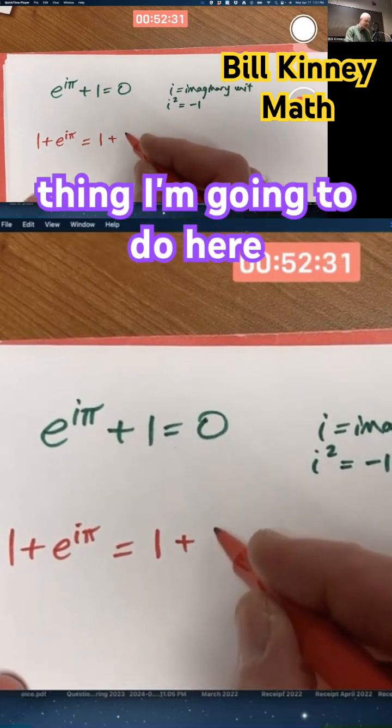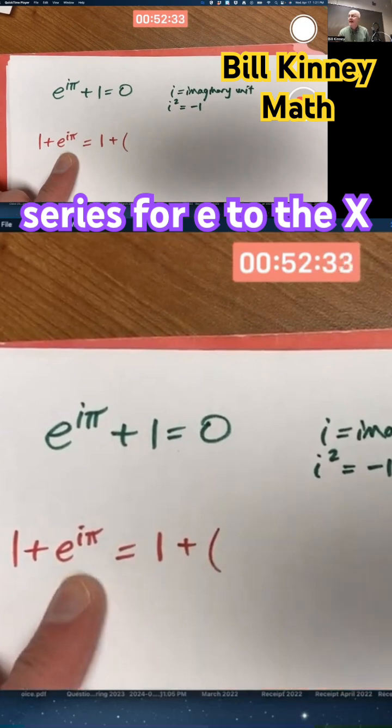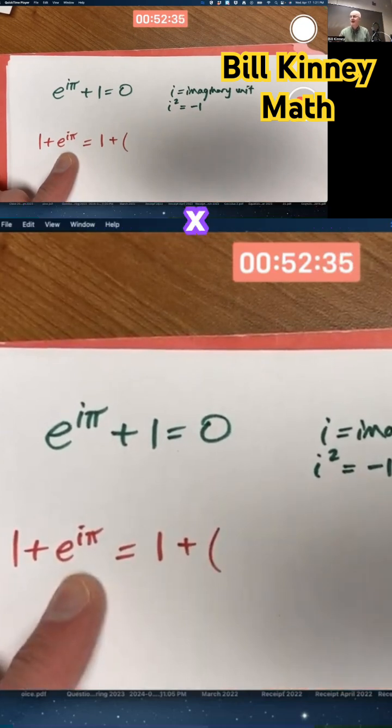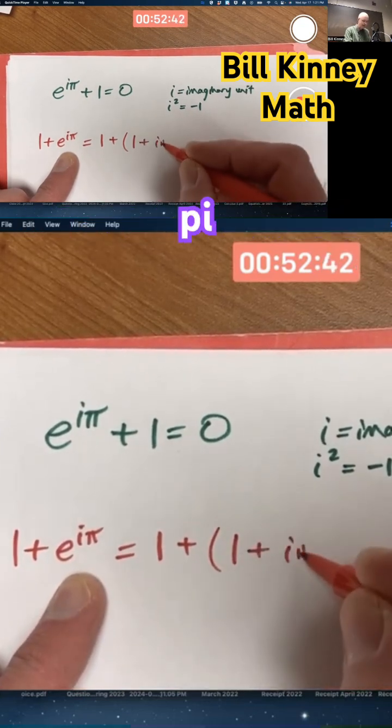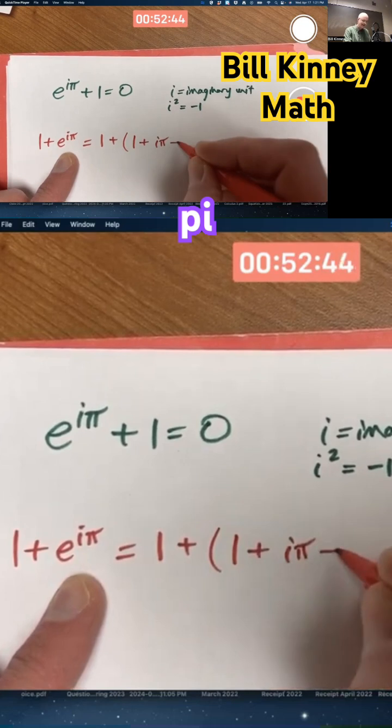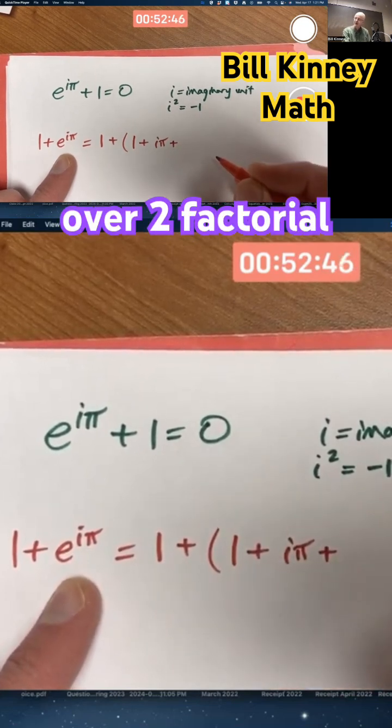Then the first non-rigorous thing I'm going to do here is I'm going to use the series for e to the x and replace x with i pi. The series for e to the x starts out 1 plus x—i pi—plus x squared over 2 factorial, right?